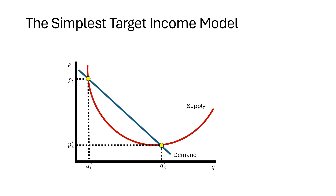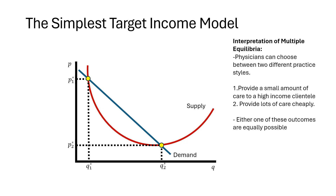This is the picture we are going to be looking at. We have a U-shaped supply curve, and we place a standard straight-line demand curve here. We see that we have two equilibria in this case. The interpretation of these two equilibria is that a physician can choose between two different practice styles: they can provide a small amount of care to a high-income clientele, or they can provide a lot of care cheaply. Either one of these outcomes is equally possible in this target income model.